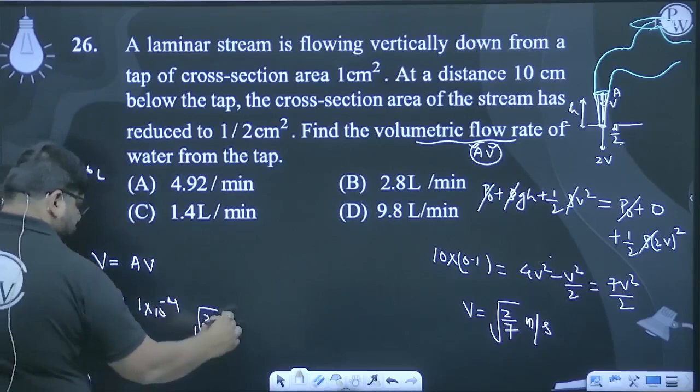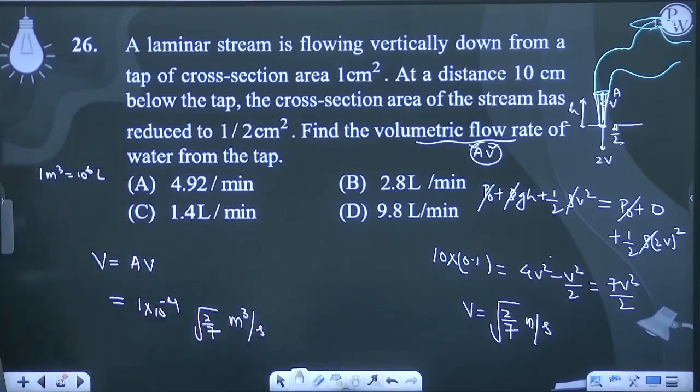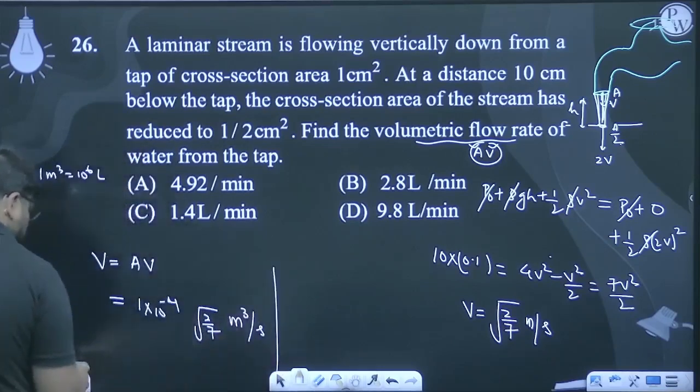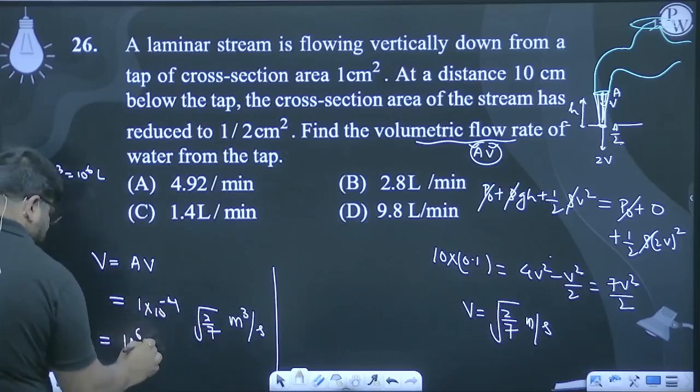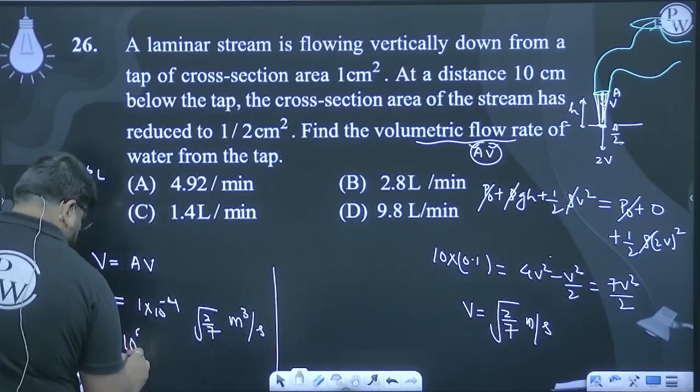Meter cube per second. To convert this to per minute, multiply by... 10⁶ into √(2/7).